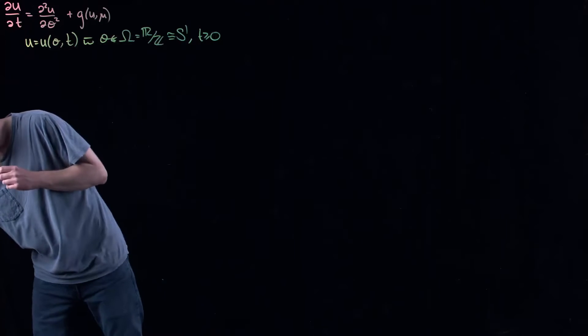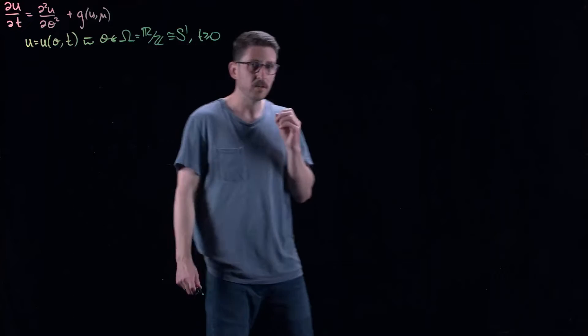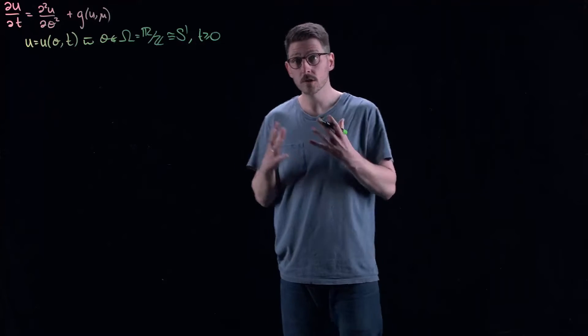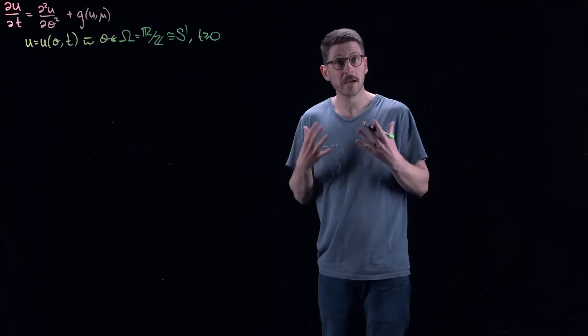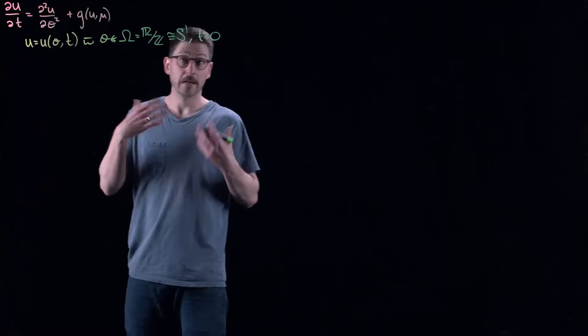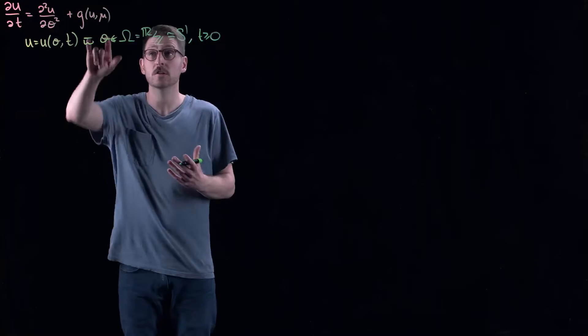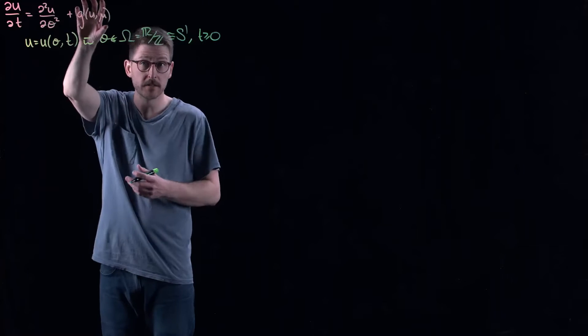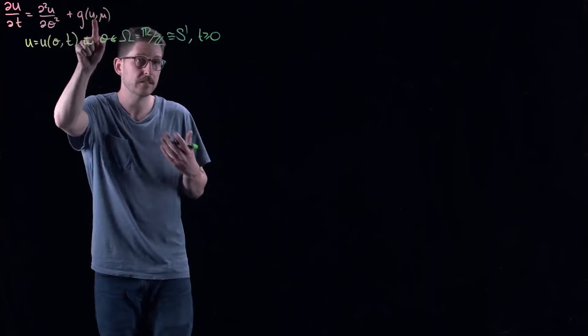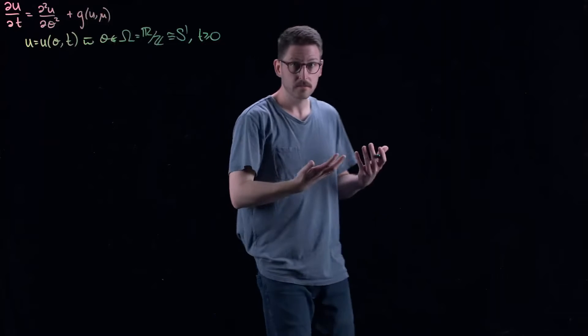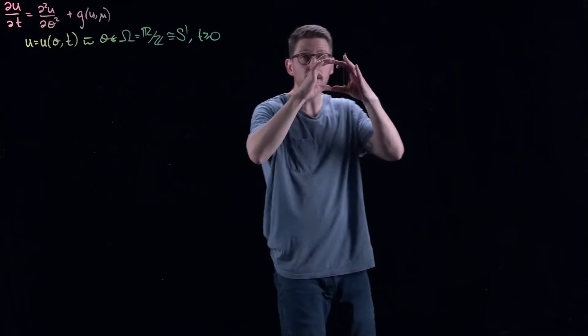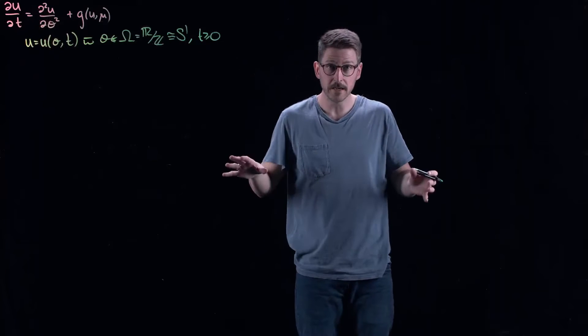But the main reason I want to talk about this is because these are some of the most fundamental partial differential equations that one would encounter in nature. That name, reaction diffusion equations, comes from chemical reaction kinetics. You can think about a chemical reaction in a petri dish. The reaction part is the actual chemical reaction. That is captured in the reaction component of this differential equation, g of u and mu. You might have reaction parameters. This is saying how the state of the system reacts.